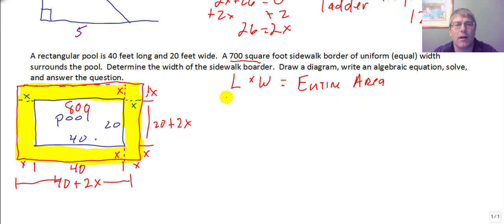From this we can write our equation. We have 40 plus 2x times 20 plus 2x equals the area of the pool, 800, plus the area of the sidewalk, 700. That's our total area.